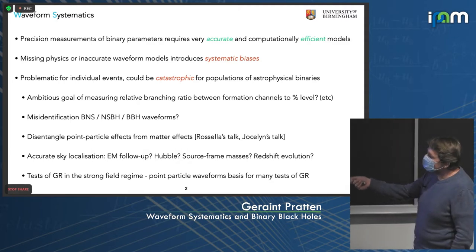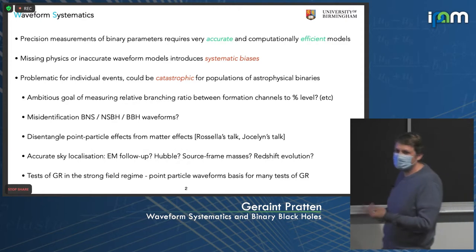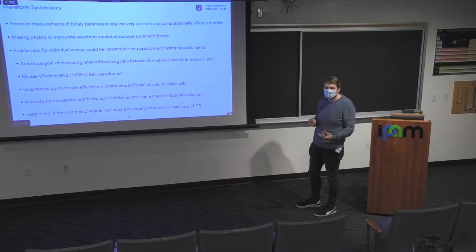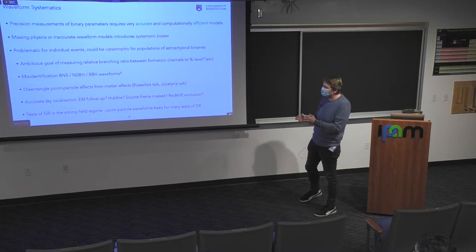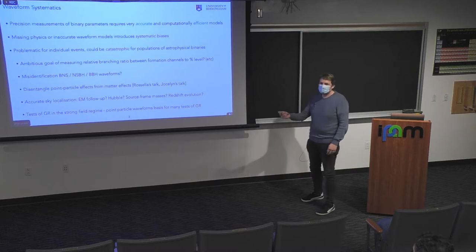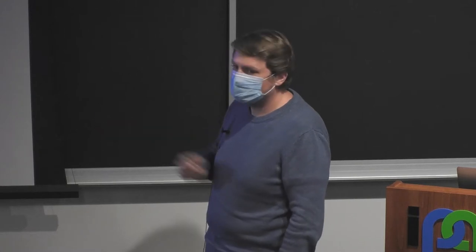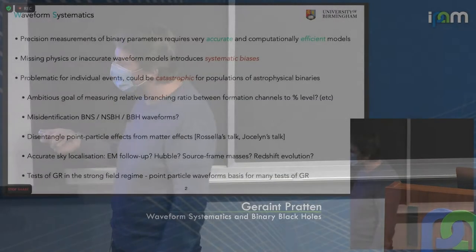Likewise, there are things such as misidentification of binary neutron star, NSBH, and BBH. What is the component mass of the smaller object in the system? You need accurate waveform models to really distinguish between these, especially for systems approaching the boundary where we think we have the maximum neutron star mass. We also need to disentangle point-particle vacuum binary black hole waveform effects from matter effects, which again requires tight control of your binary black hole waveform models.